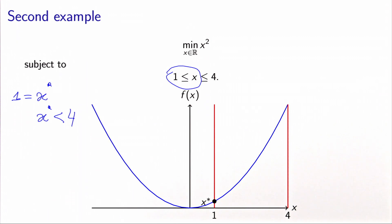Because there is a constraint which is active at the solution, this constraint matters — ignoring it would modify the solution. While if we ignore the inactive constraint x less or equal to 4, then the solution will not change.